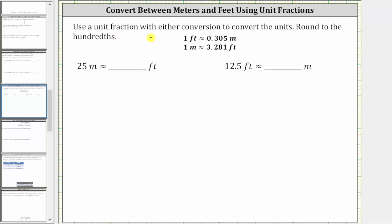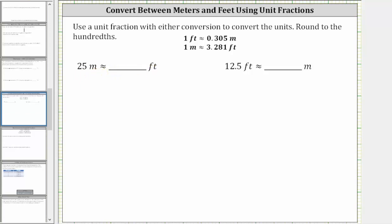We're asked to use a unit fraction with either conversion to convert the units, rounding to the hundredths place value, and we will show both setups. For the first example, we're asked to convert 25 meters to feet. We first write 25 meters as a fraction with a denominator of one — so we have 25 meters over one — and we'll show two setups using both conversions.